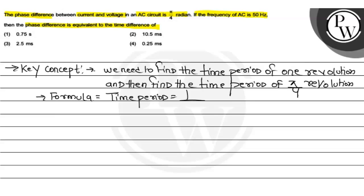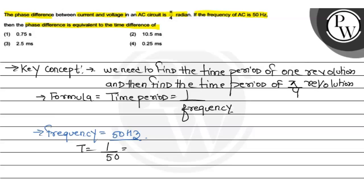The formula is: time period equals 1 by frequency. The frequency given is 50 Hz. So this value will be T equals 1 by 50, which is equal to 0.02 second.